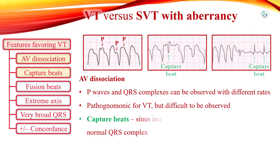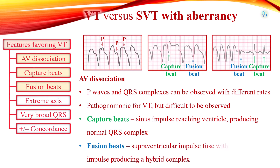Capture beats occur when the sinoatrial node transiently captures the ventricles during AV dissociation, producing a narrow QRS complex. Fusion beats occur when a supraventricular impulse causes ventricular activation, which fuses with the complex originating in the ventricle, producing a hybrid complex.